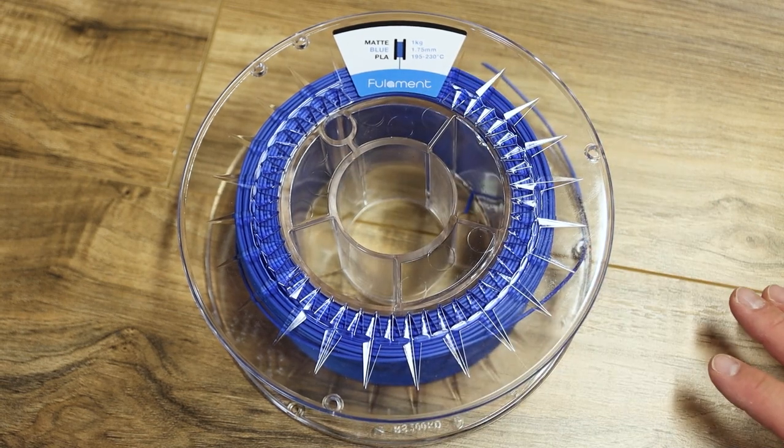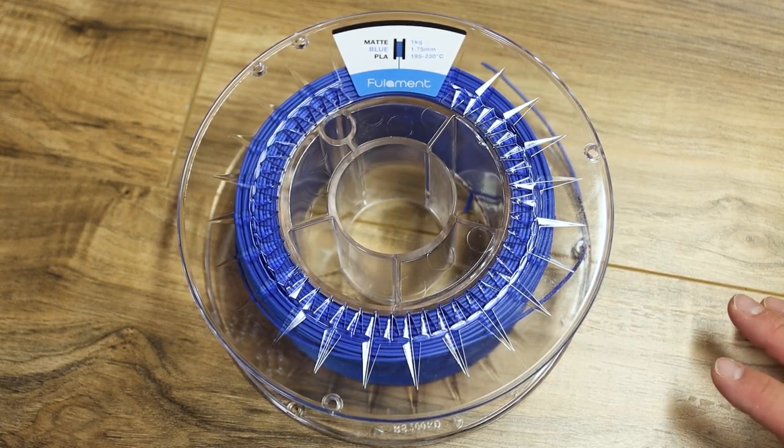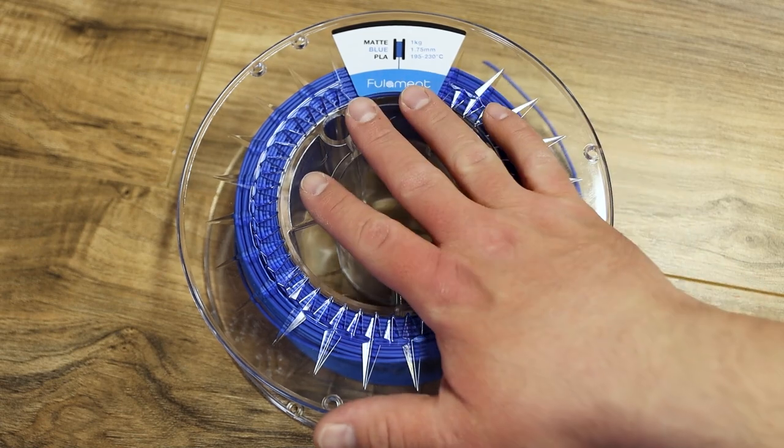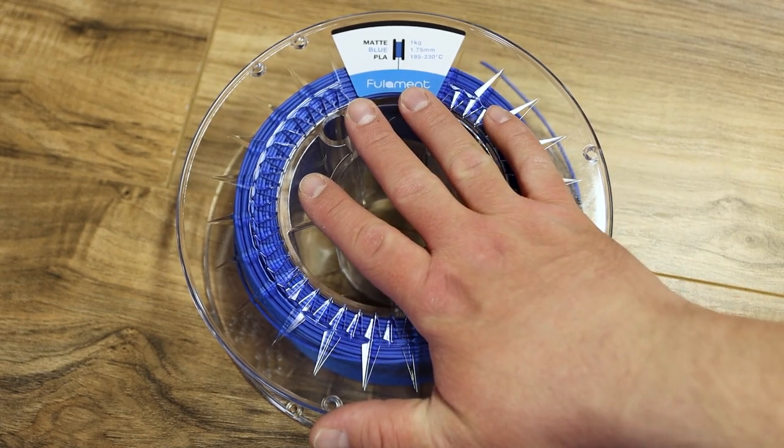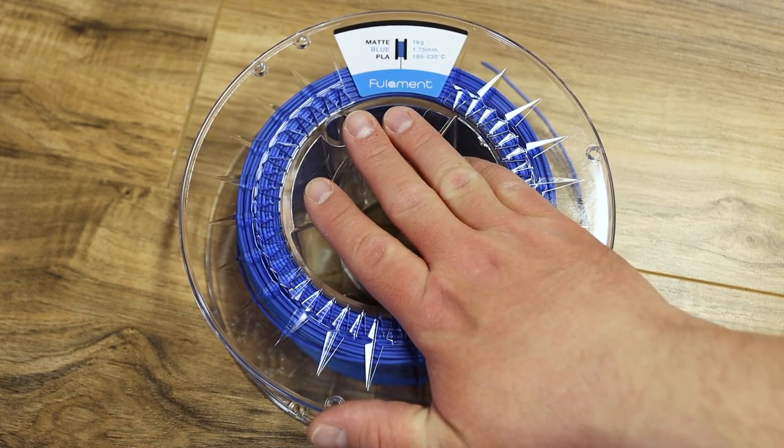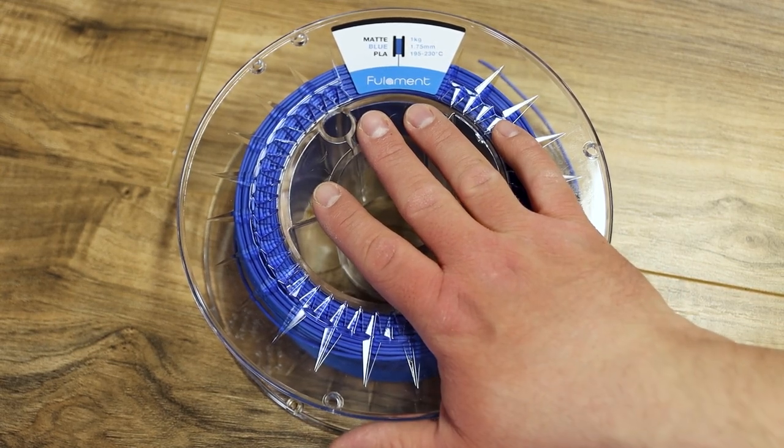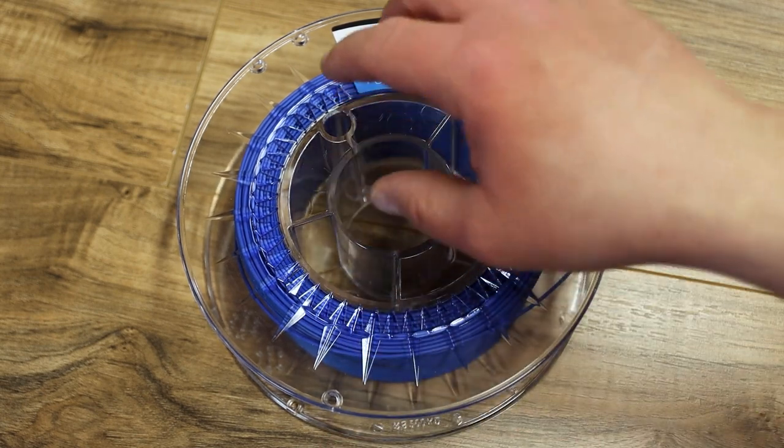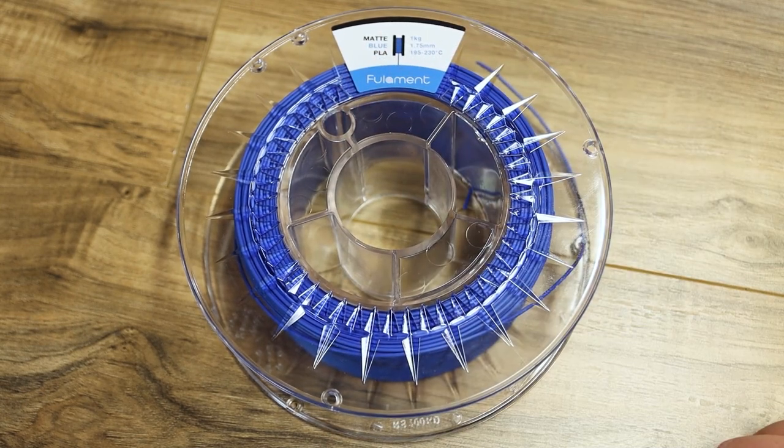But grab yourself a couple rolls of filament. Make sure that when you first start maybe you just use the sample roll that comes with your printer. Or just grab a really cheap roll and then burn through that to learn. And then jump into something like maybe this matte blue from filament, which you'll absolutely love when you start printing. But don't forget your filament. That's very important to 3D printing.